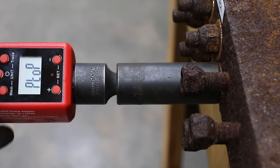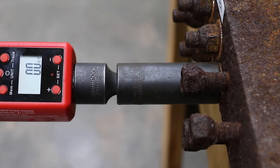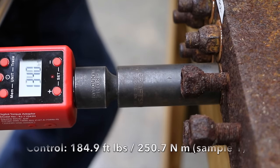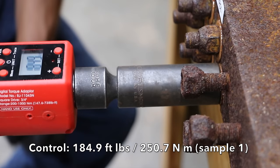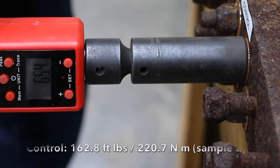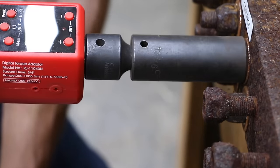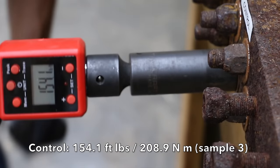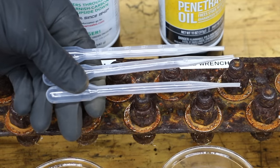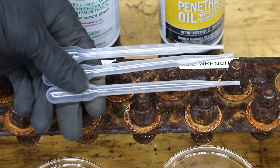Before applying penetrating oils, we'll first test several bolts without the use of penetrating oil. The first nut required 184.9 foot-pounds to unseize the frozen nut. The second required 162.8. The third required 154.1. Now that we've established our control, let's apply the penetrating oils to the bolts.